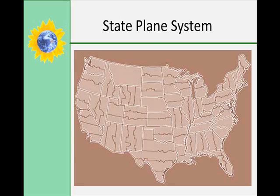The state plane system treats small portions of the Earth as flat surfaces. It consists of 111 separate zones within the United States. The origin of each coordinate system is always the southwest corner of the zone to avoid the use of negative coordinates. Units are measured in feet, using the imperial system rather than metric. The advantage is that only a small amount of distortion occurs due to the smaller section size. The disadvantage is that there are 111 zones and no way to convert measurements between zones, so it's only relative within a particular zone.